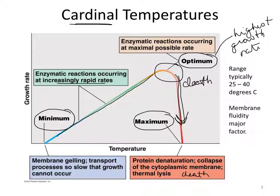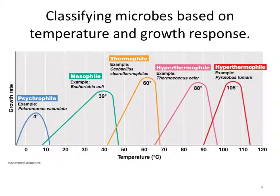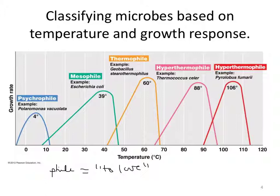Let's think about the adaptations involved in helping organisms deal with temperature extremes, but first let's talk about how microbes are classified based on temperature and their growth response. The term 'phile' approximately means to love. So a psychrophile is something that loves cold temperatures.